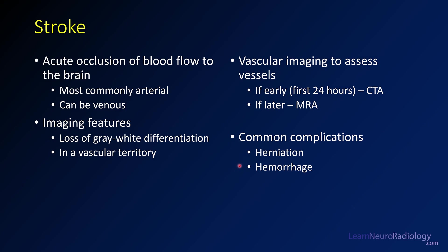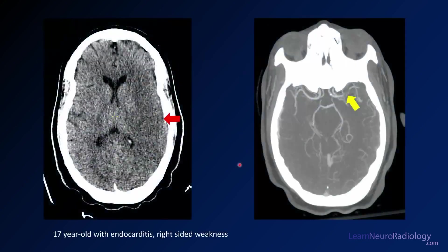Here we see a CT from a 17-year-old with endocarditis and right-sided weakness. Anytime I look at a CT, I want to see gray matter coating the white matter everywhere. As I come around to the left side, around the left frontal lobe, I lose that gray-white differentiation and see this area of diffuse hypodensity. It takes up the majority of the left MCA distribution, kind of in this whole left hemisphere, with a little bit of sparing of the posterior territory.